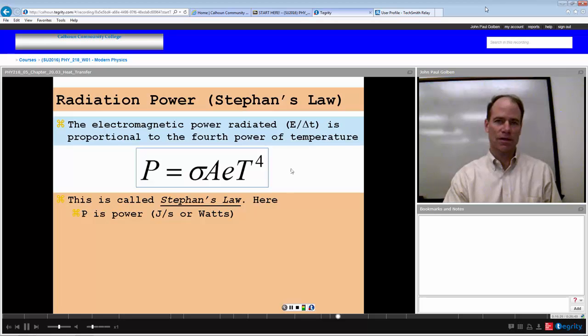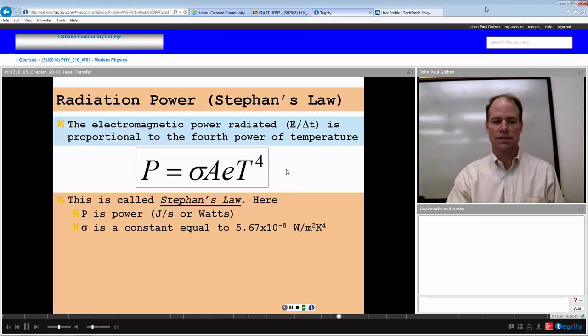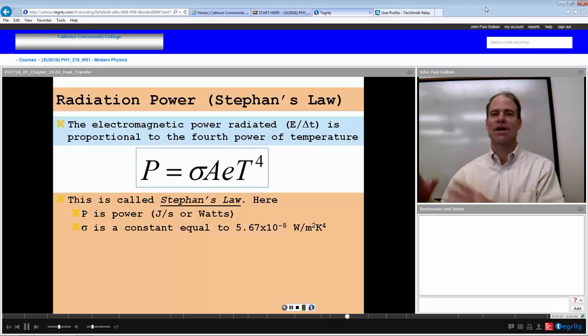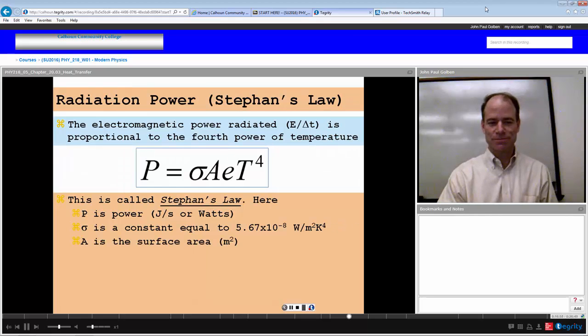P is the power in joules per second or watts. Sigma is the Stefan-Boltzmann constant and it is 5.67 times 10 to the minus 8 watts per meter squared per Kelvin to the fourth power. Note the nice number 5.67 again, times 10 to the minus 8. Physicists like to make these numbers easy. 5.67 times 10 to the minus 8. Too easy. Got to remember that one.